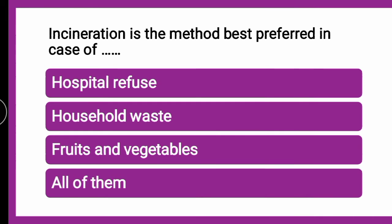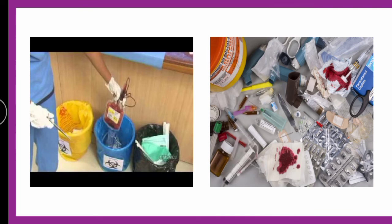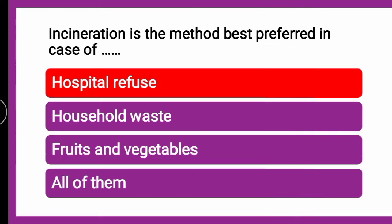The next question: Incineration is the method best preferred in case of — hospital refuse, household waste, or fruits and vegetables? The correct answer is hospital refuse. Incineration is best preferred for hospital refuse because it is quite risky. In pandemic situations, for example, nasopharyngeal and nasal swabs are too risky to dispose of through dumping. Incineration is the best method to destroy hospital refuse.